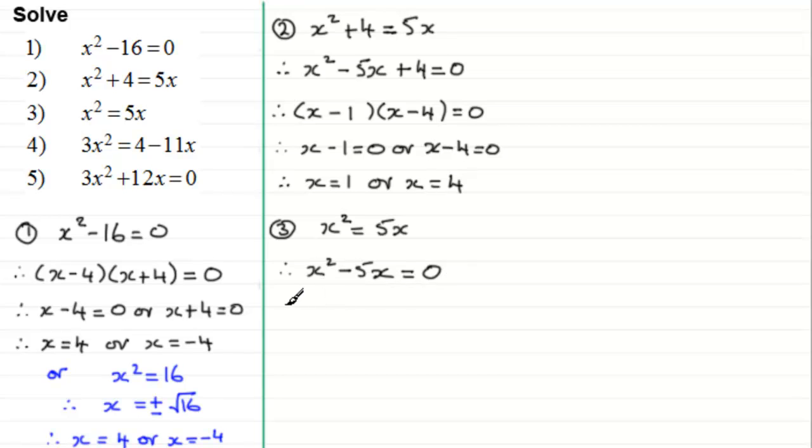So we get x squared minus 5x equals 0. Then we factorize, and in this example there's just a common factor here of x. So we've got x bracket (x minus 5) and that equals 0. So we've got two factors, x and x minus 5. So therefore each of those factors could equal 0.